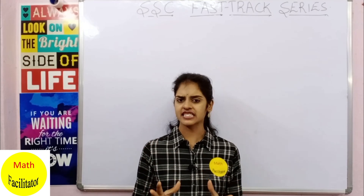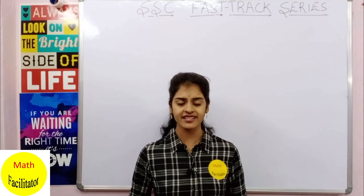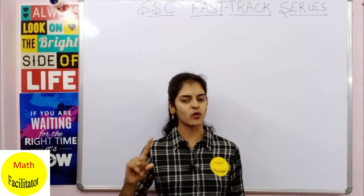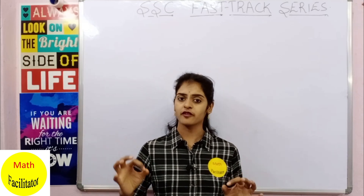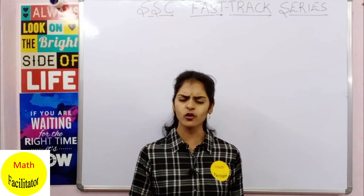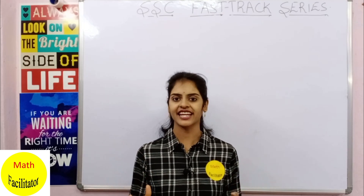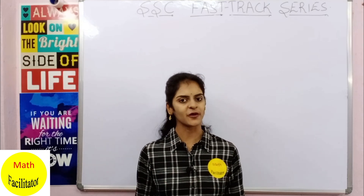Here we are discussing chapter-wise previous years' important questions along with the concepts. We have completed Paper 1, which contains seven chapters — if you have not watched those videos, do go and watch, because it gives you a complete package of all the important concepts in one place. Today we are going to start Paper 2, and in this video we are going to discuss Chapter 9: Tangents and Secants to a Circle.